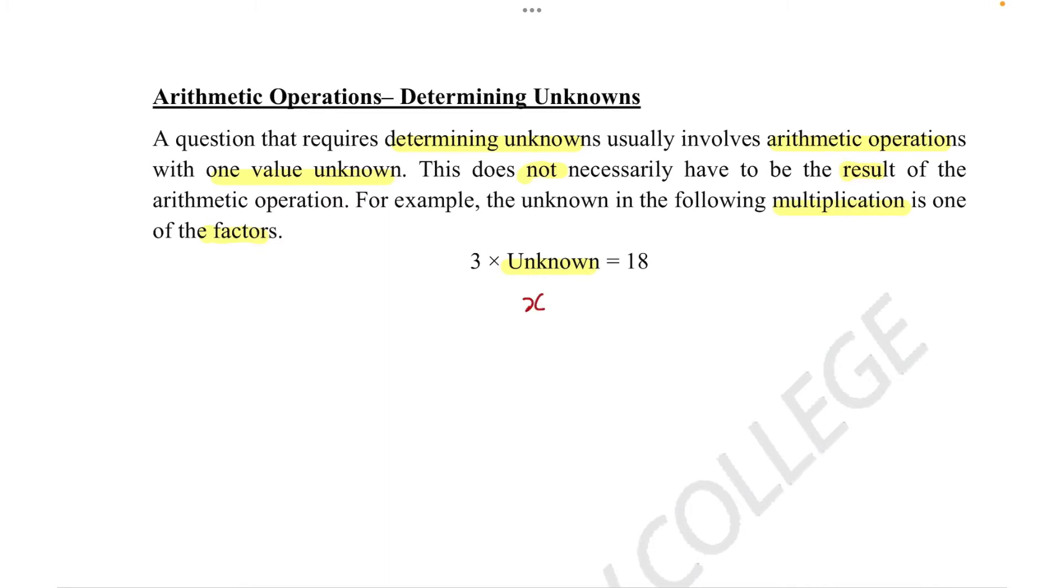So if we replace unknown with x, we get 3 times x equals 18. When we're switching around values, we're not actually switching them around. It may appear that way, but let me show you what is actually happening.